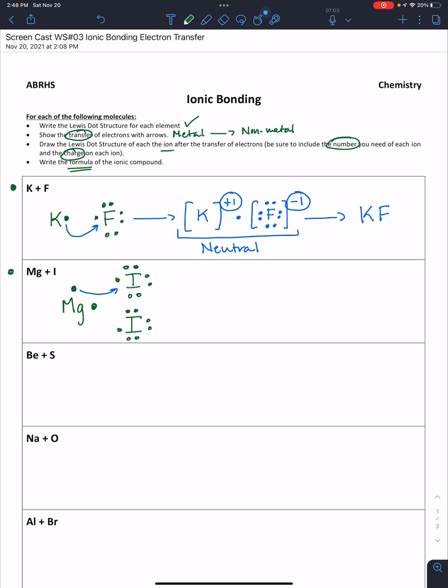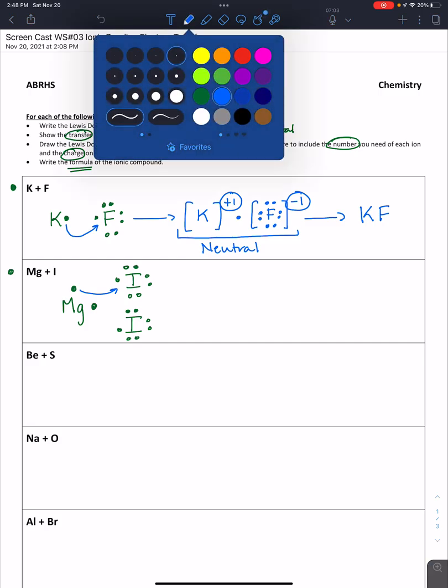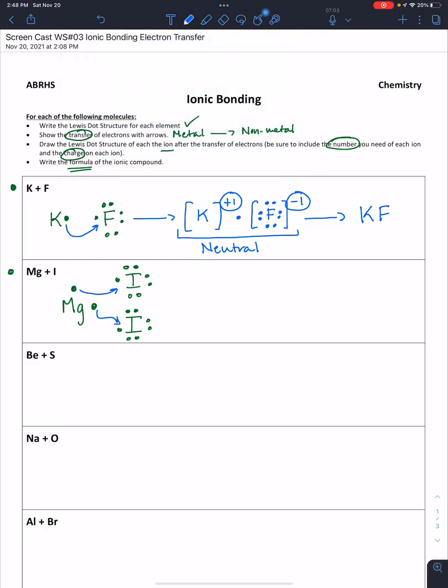That means we actually need a second atom of iodine. We draw a second atom with seven valence electrons and show that transfer of the second electron from magnesium to the second atom of iodine.